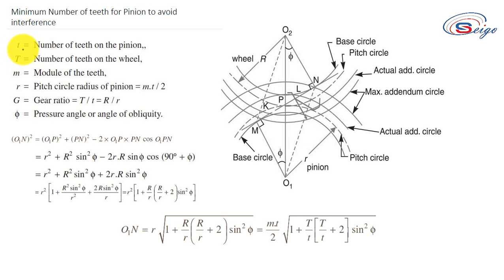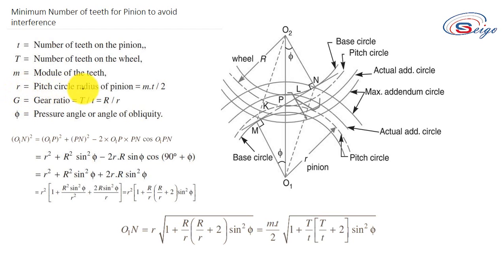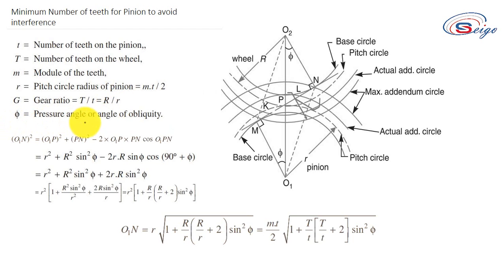Here, small t is the number of teeth on the pinion, capital T corresponds to the number of teeth on the gear wheel, M is the module of the teeth, small r corresponds to the pitch circle radius of the pinion, capital R corresponds to the pitch circle radius of the gear wheel, G is the gear ratio which equals capital T divided by small t, also equal to capital R divided by small r, and phi is the pressure angle or angle of obliquity.